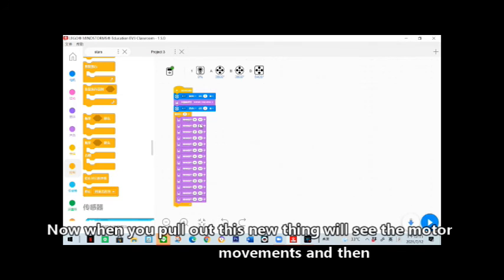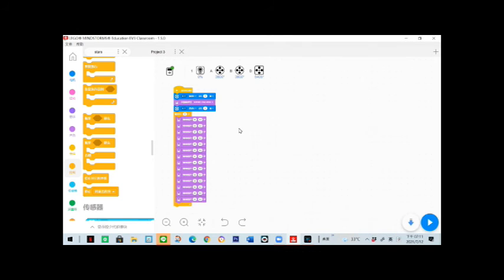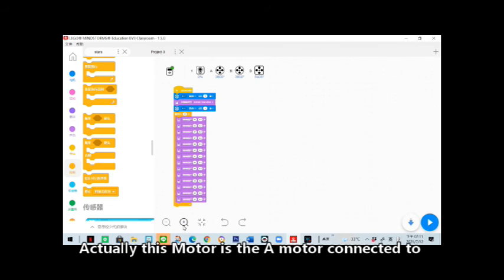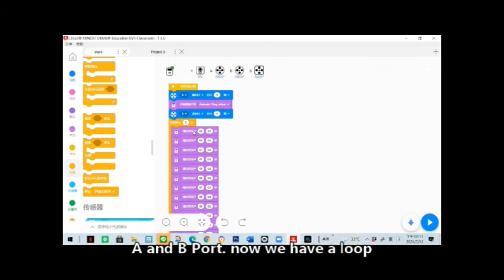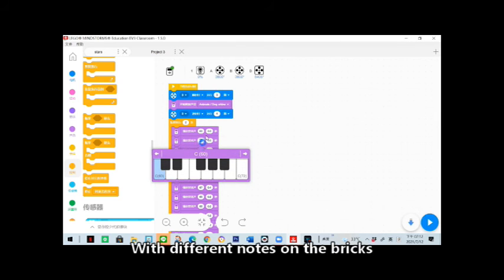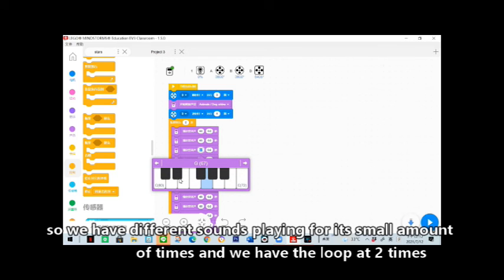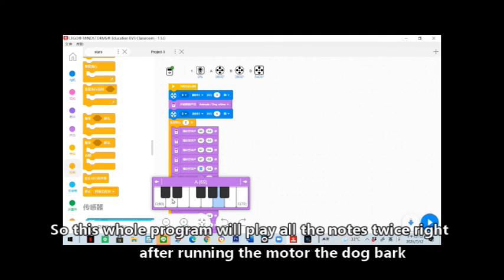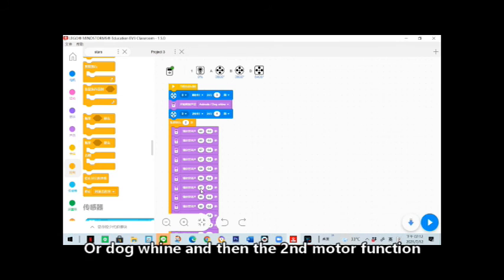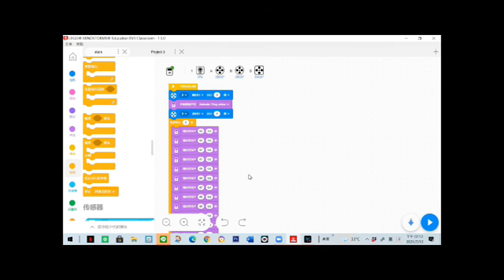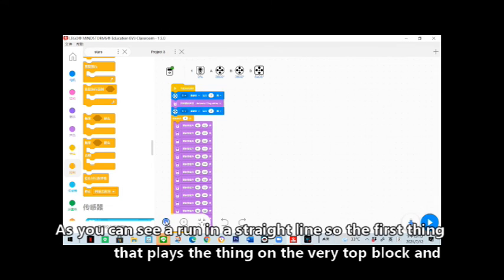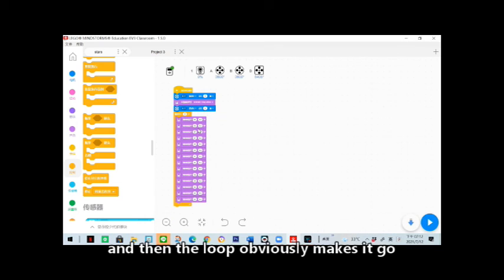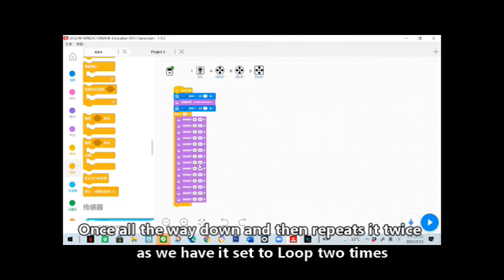Now when you pull out this new thing, we'll see the motor movements. Actually this motor is the A and B things. Now we have a loop with different notes on the brick, so we have different sounds playing for a small amount of times and we have the loop set at two times. So this whole program will play all the notes twice right after running the motor, the dog bark or dog whine, and then the second motor function. As you can see, it'll run in a straight line. So the first thing that will play is the thing on the very top, and then the loop obviously makes it go once all the way down and then repeats it twice as we have it set to loop two times.